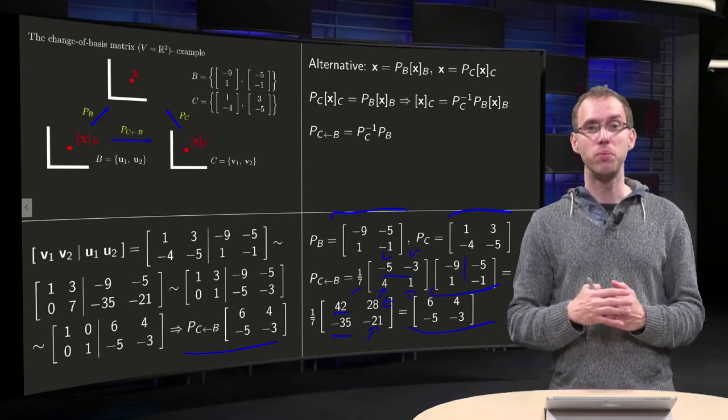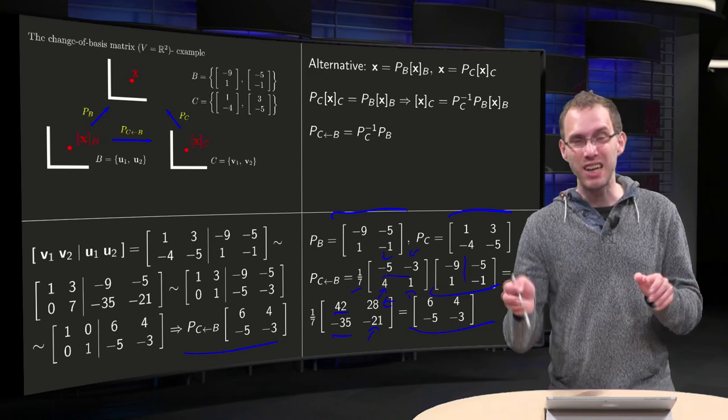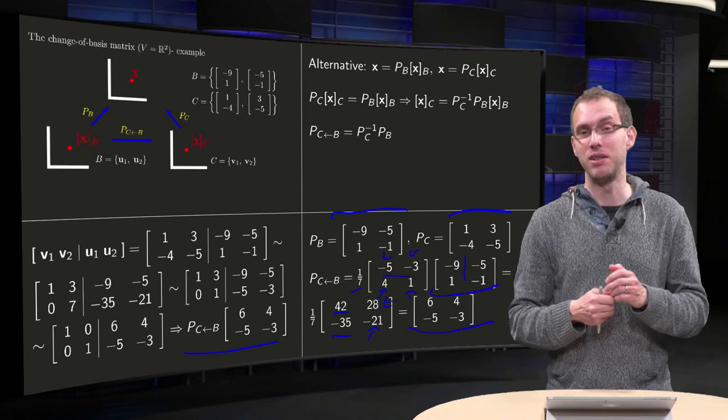So you see, we have two methods to compute P from B to C, but we often use the first one, because the second one involves computing of some inverse, which we don't like to do if we can avoid it.